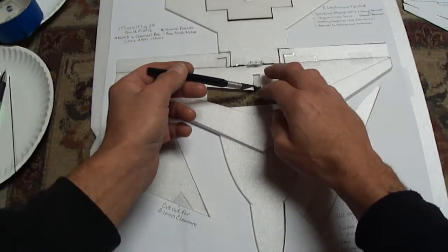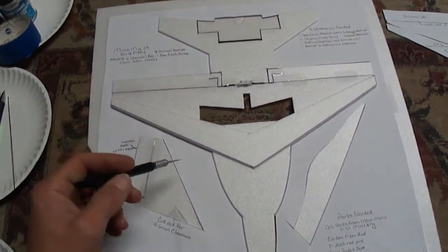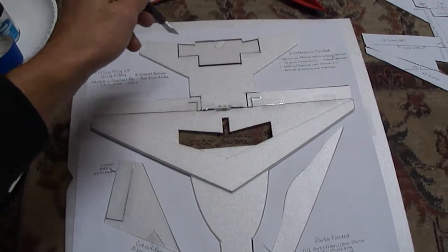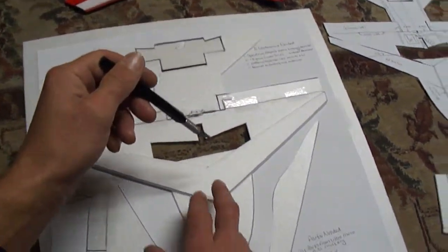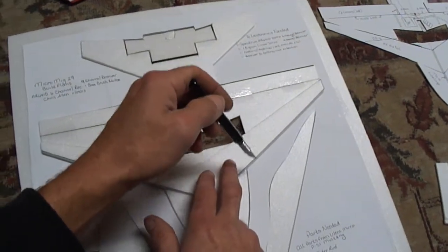Your motor. Then we went ahead and cut out the main fuselage, and we made sure we cut at a 45 degree angle all the leading edges.